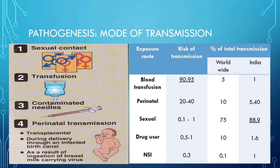Moving to pathogenesis, an important topic is mode of transmission. HIV is transmitted through the following modes: sexual contact is by far the most common mode, accounting for 75 percent of total cases worldwide. The heterosexual route — male to female via vaginal route — is the commonest mode; however, the risk per exposure is minimal at 0.1 to 1 percent. Blood transfusion is the least common mode at 5 percent, but the risk of transmission is maximum.